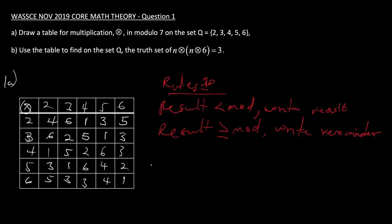Moving on to part b: use your table to find, on the set S, the truth set of n times (n times six) equals three. So we are asked to find the truth set of n*(n*6) = 3.